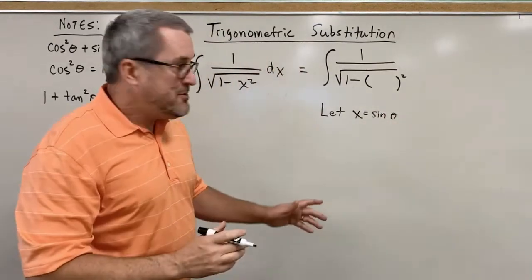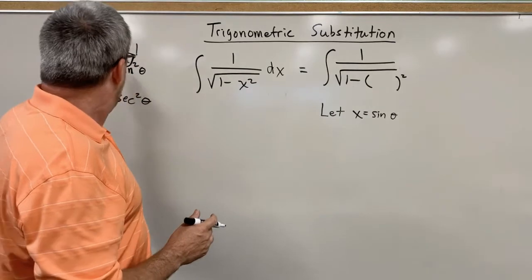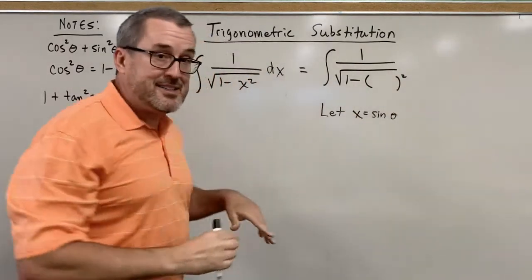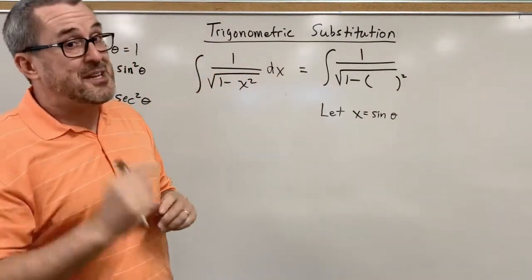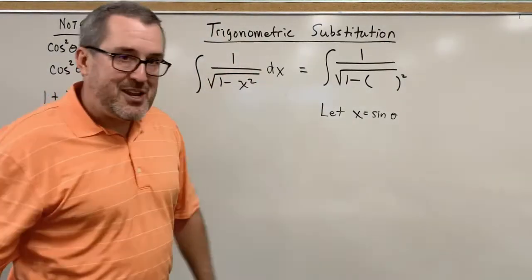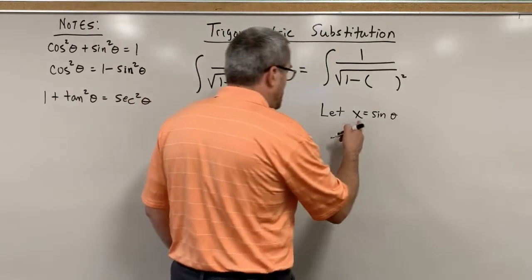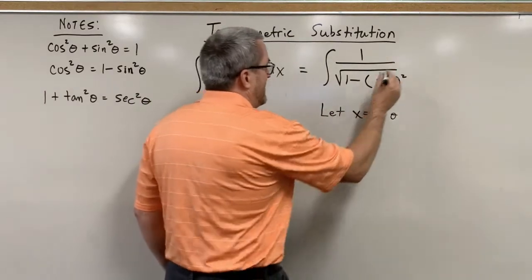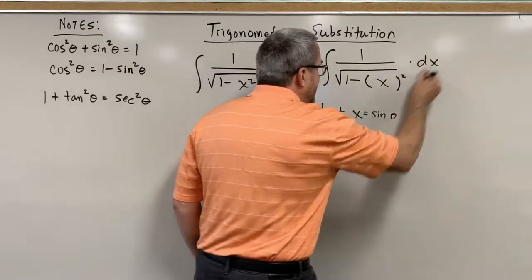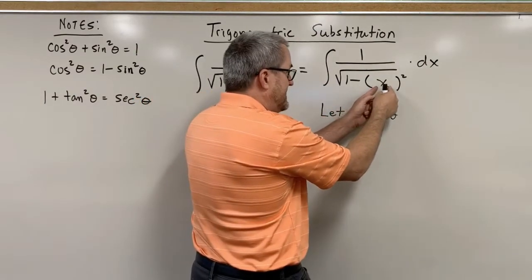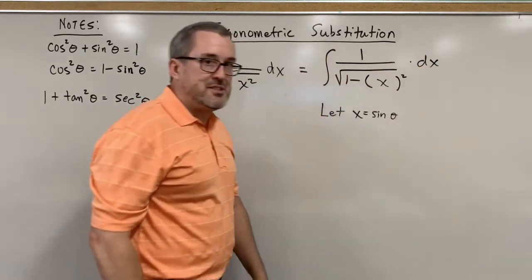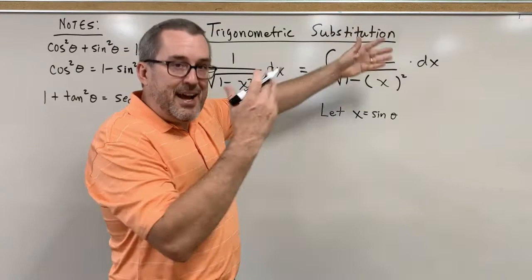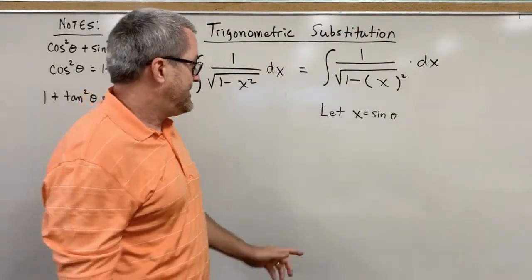This is not just a random choice. Again, it's coming from this thing over here: one minus sine squared. One minus sine of theta squared. Since one minus sine of theta squared is the same as cosine squared, that's going to be really useful to us as we change the structure of this integral. So we're going to let x be the sine of theta to use this identity, but we have to do some more work as well because we also have this dx here.